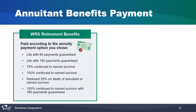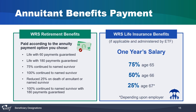Once you retire and start receiving your annuity, your beneficiaries would receive a WRS death benefit based on the annuity option you selected. If you continue your WRS life insurance benefits into retirement, your benefit coverage will be 100% until age 65. At age 65, coverage goes down to 75% of the basic plan, and down to 50% at age 66. Depending on which program your employer enrolled in, it may reduce further to 25% at age 67.